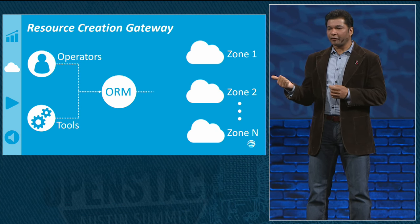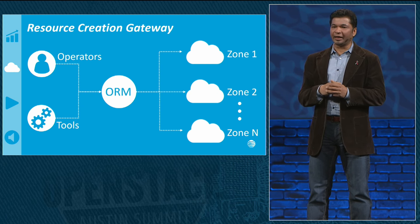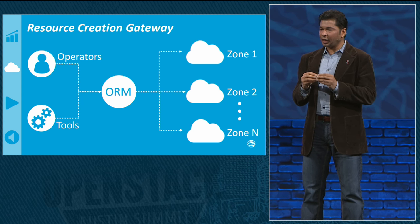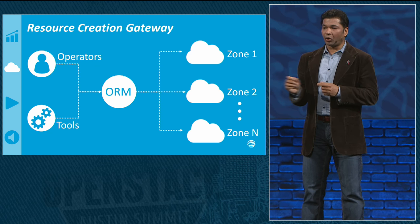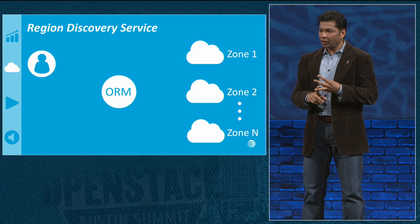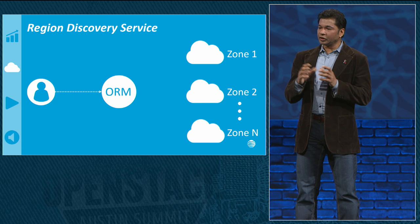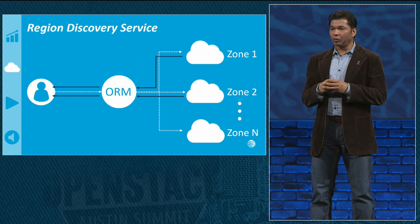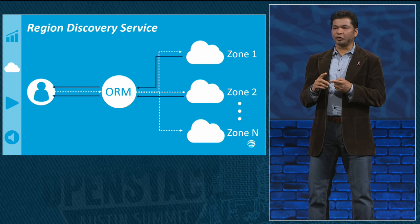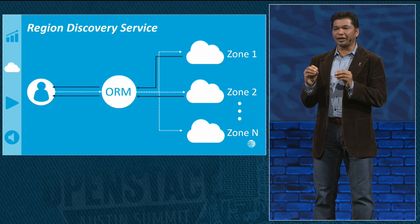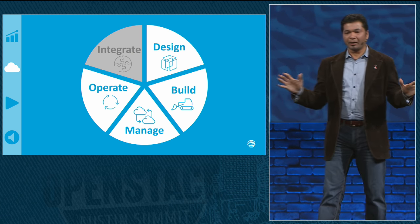The resource creation gateway provides APIs that allow the definition of new images, flavors, and user accounts, as well as the distribution of these to the required AIC cloud zones. For example, if a cloud operator wanted to create an image for a network function and distribute it only to a select set of AIC zones, ORM tags several zones with a group name, specifies the group name as the target, and distributes the images to the group. The region discovery service returns zones best suited to support the tenant's needs at the time of request — think of ORM exactly like an online hotel reservation system, hiding the complexities of thousands of zones behind a single pane of glass.